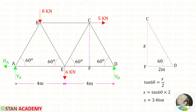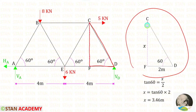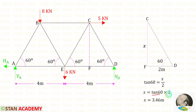Before finding the reactions, we have to find the height of the truss. In the center of member ED, let us draw a line and keep this point as CF. Taking triangle CFD, let us keep the distance CF as X. Using the formula tan θ = opposite/adjacent, tan 60 = X/2. After multiplying, we get X = 3.46 meters.